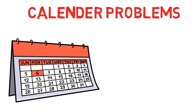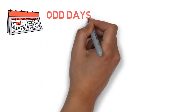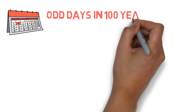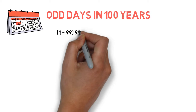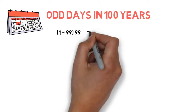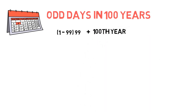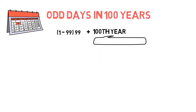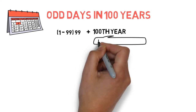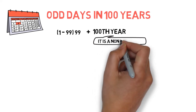Calendar problems. Let's check the number of odd days in 100 years. For that, we need to split this 100 years into 99 years plus the 100th year. Because in these 100 years, the 100th year is a century year, and we have to know that this century is a non-leap year because it is not exactly divisible by 400.